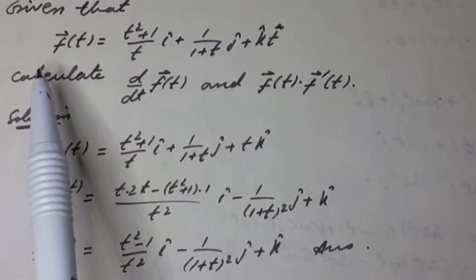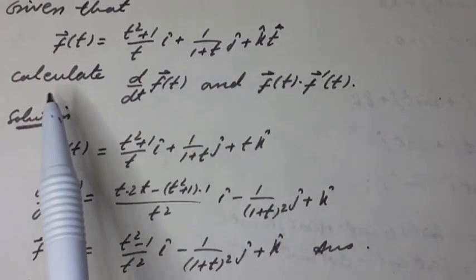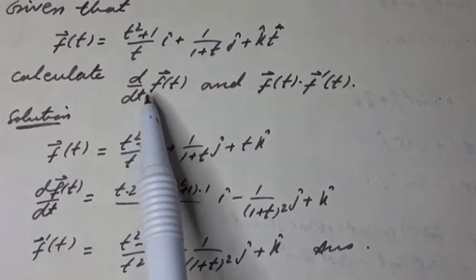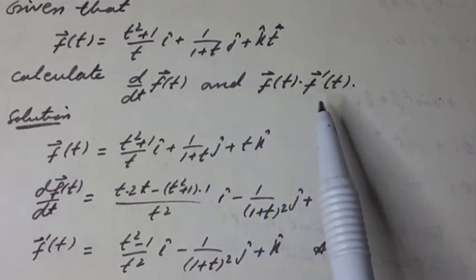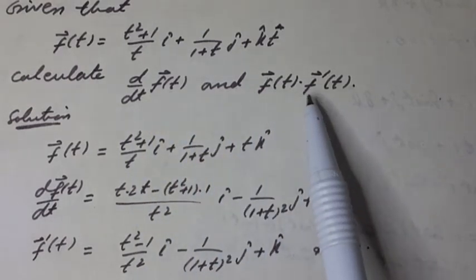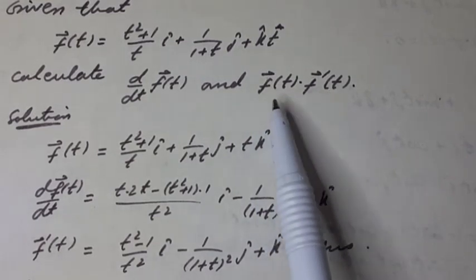Given that vector function of scalar variable f-vector of t is equal to (t² + 1)/t i-hat plus 1/(1 + t) j-hat plus t k-hat. Calculate d/dt of f-vector(t), and f-vector(t) dot f-vector-dash(t) — that is, the first derivative and the dot (scalar) product of the given vector function and its first derivative.